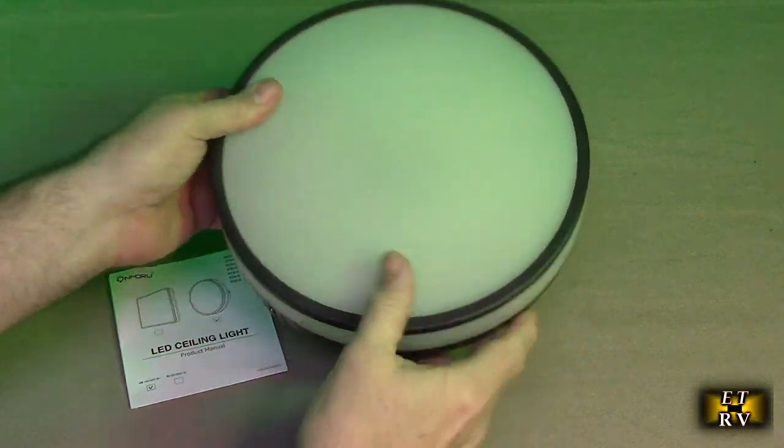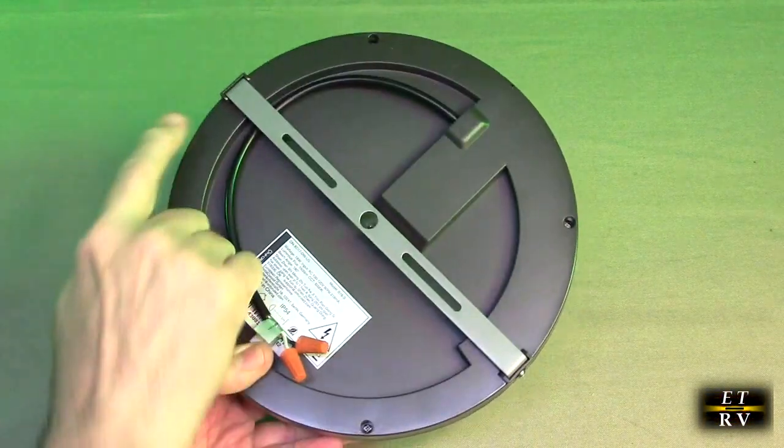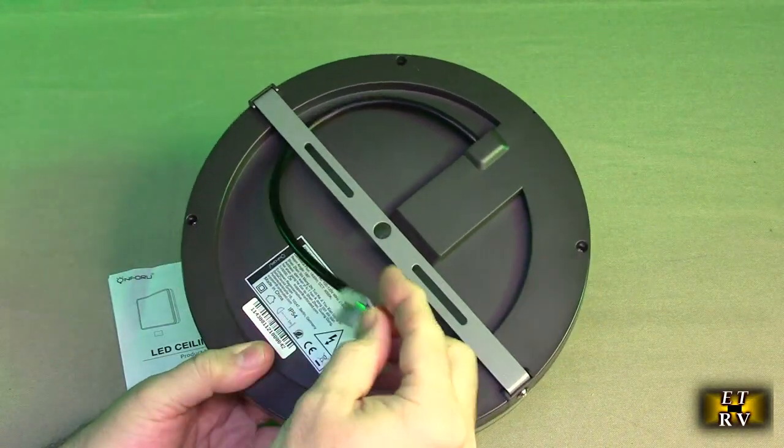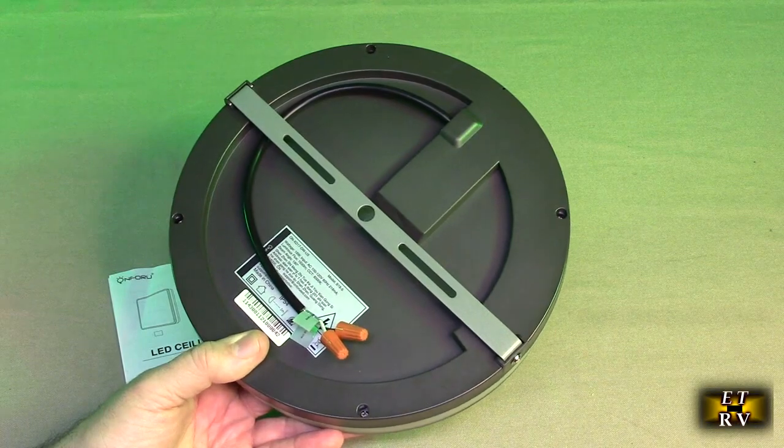Another unique feature is, as I was saying, you don't have to take the lampshade apart to install it. You can just remove that screw there and then wire it in directly, so it makes installation quite easy.